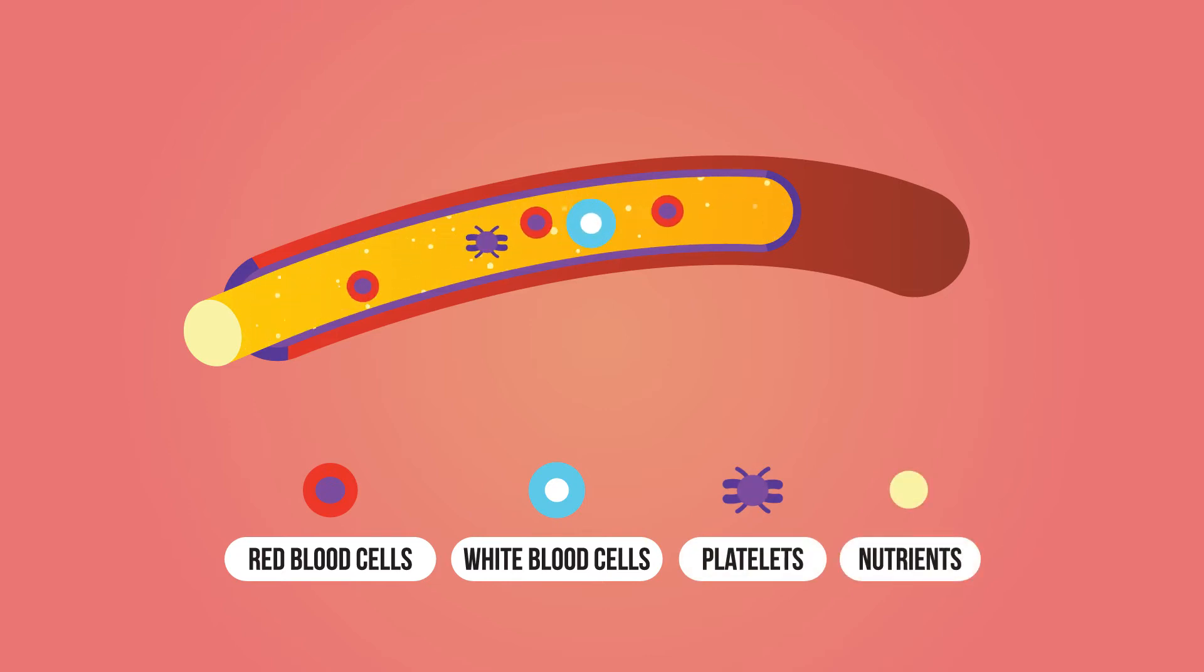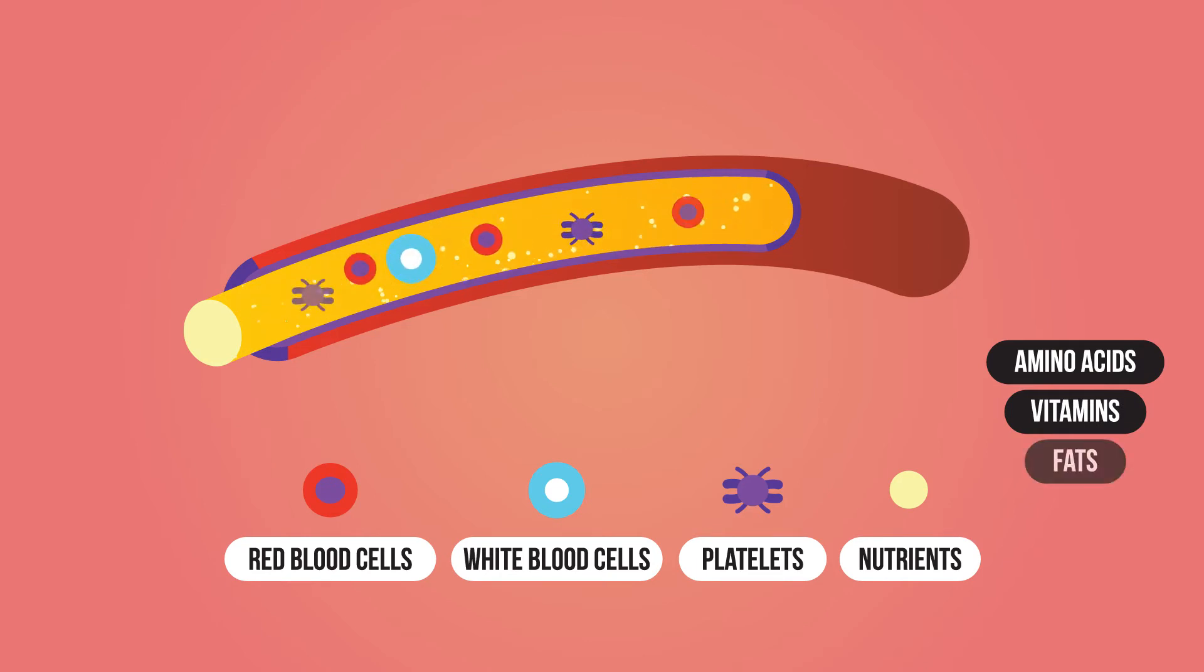The nutrients come from the food we eat every day and include amino acids, vitamins, fats, sugars and fatty acids. These key components are used to keep us fit and healthy.